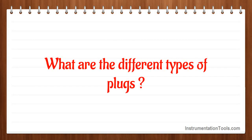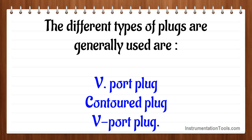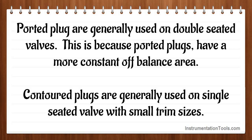What are the different types of plugs? The different types of plugs generally used are v-port plug and contoured plug. Ported plugs are generally used on double seated valves because ported plugs have a more constant off-balance area. Contoured plugs are generally used on single seated valves with small trim sizes.